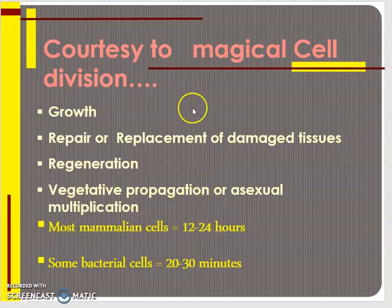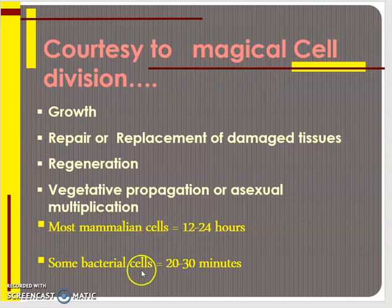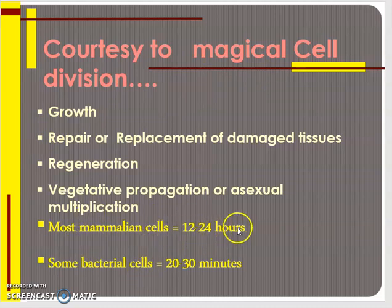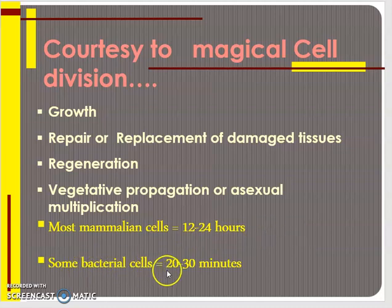The duration of cell division varies from individual to individual. In most mammalian cells, it takes 12 to 24 hours to complete the cycle, while in some bacterial cells it is completed in only 20 to 30 minutes.